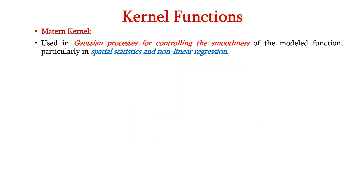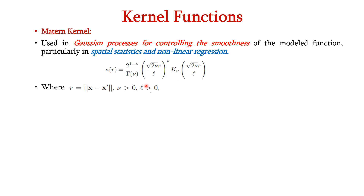Next, let us see about the Matérn kernel. This is used in Gaussian processes for controlling the smoothness of the modeled function, particularly in spatial statistics and non-linear regression. It is expressed as K of r, where r equals x minus x dash and measures the similarity between x and x dash. Here, v is the smoothness parameter greater than 0, l is the length scale parameter also greater than 0, and Kv is the modified Bessel function. When v tends to infinity, the Matérn kernel reduces to the RBF kernel.